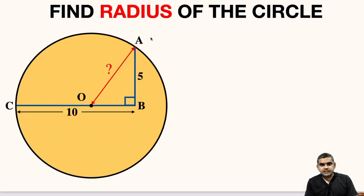In this question we need to find the radius of the circle. Here the distance C to B is given as 10 units while distance between A and B is given as 5 units.